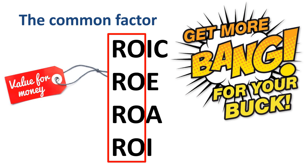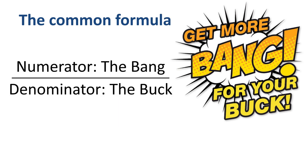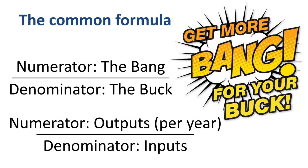For all of these financial metrics — ROIC, ROE, ROA, ROI — the higher the better, assuming the returns are sustainable and not a one-off. The formula and calculation of these metrics is very similar: put the bang in the numerator and the buck in the denominator. In other words, put the outputs, benefits, or returns per year in the numerator, and the inputs, investment, or capital in the denominator.